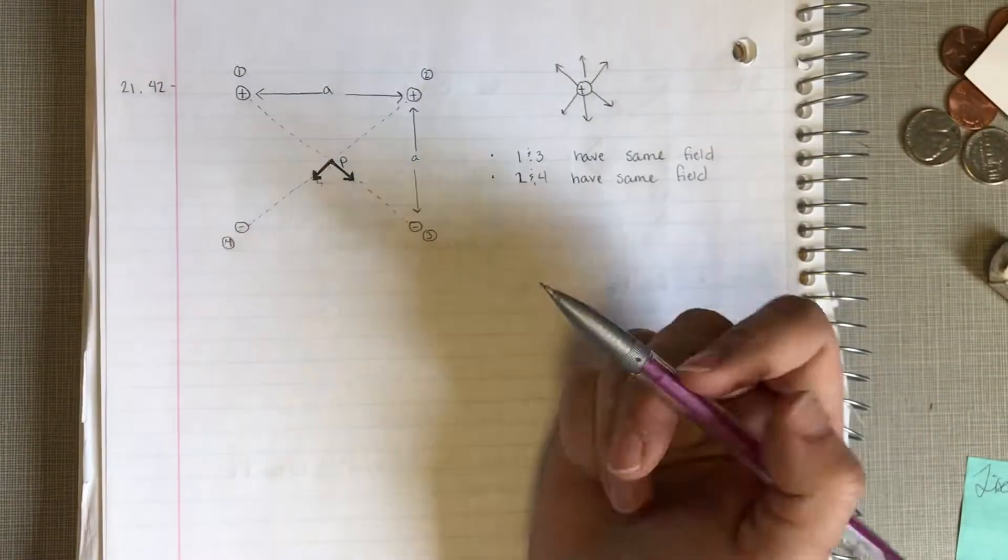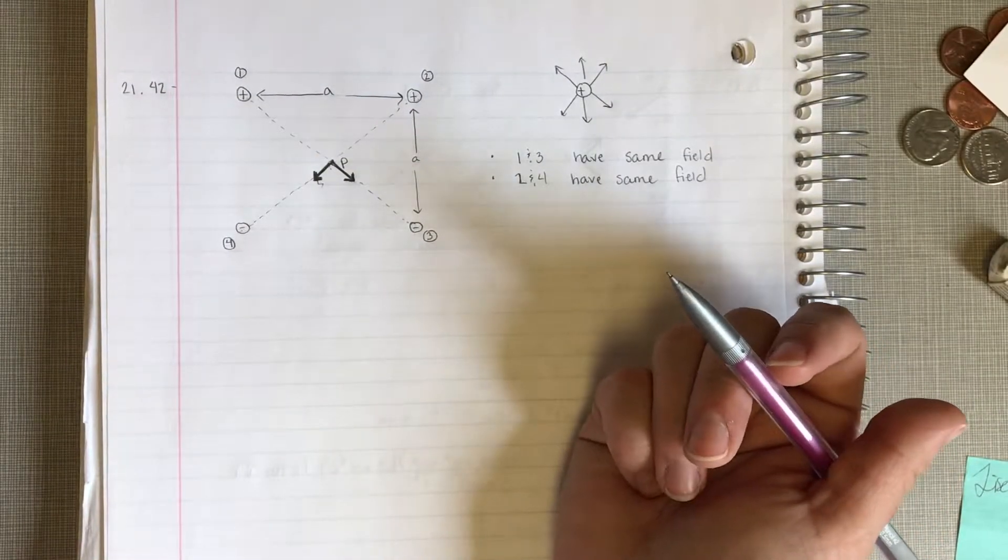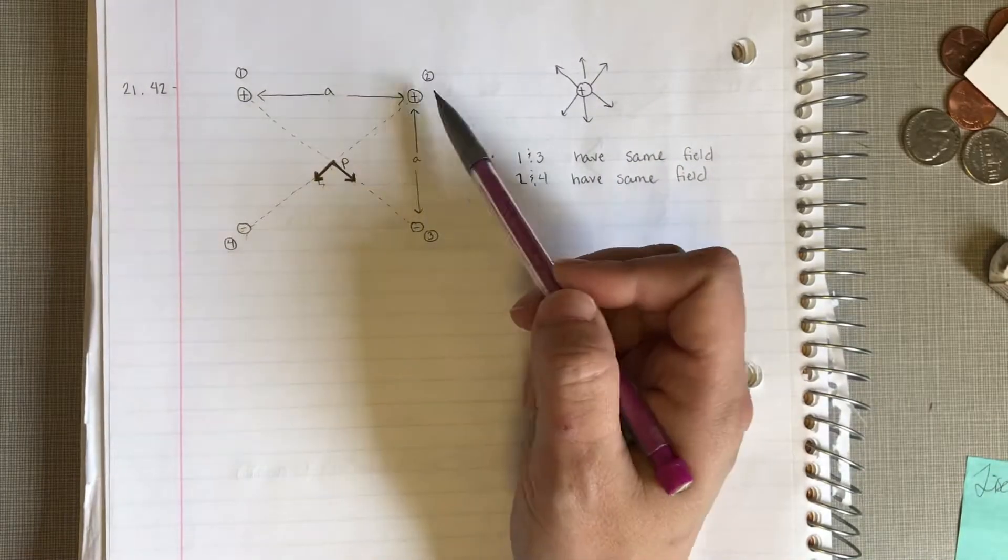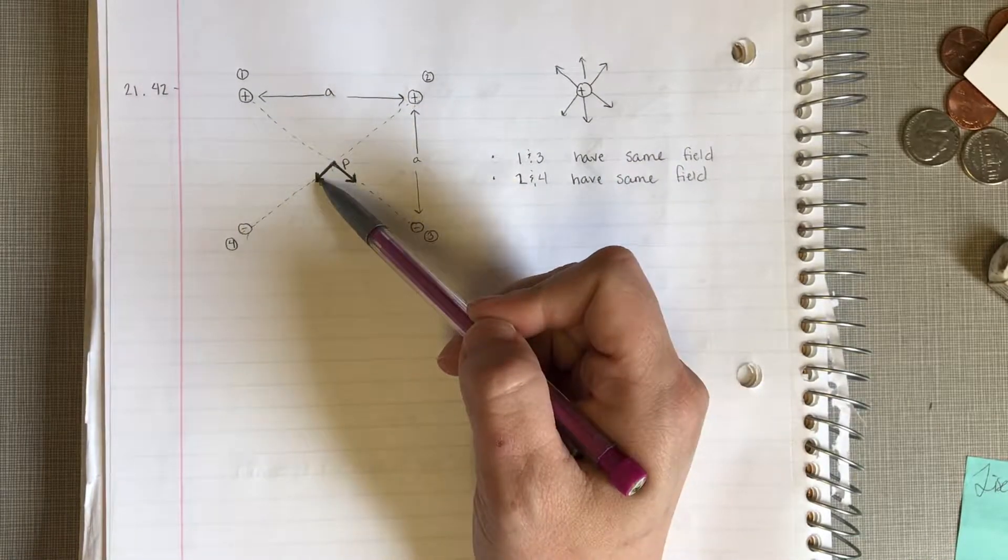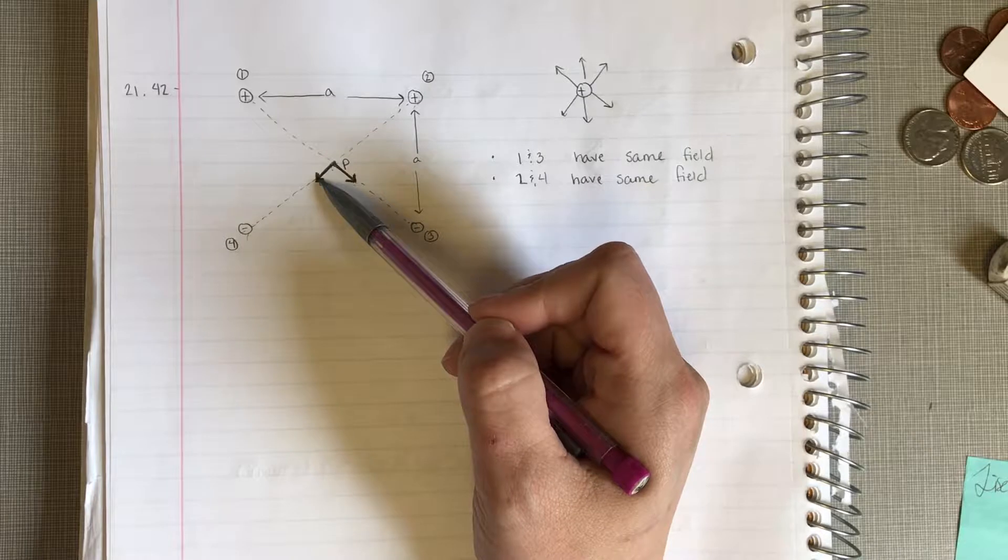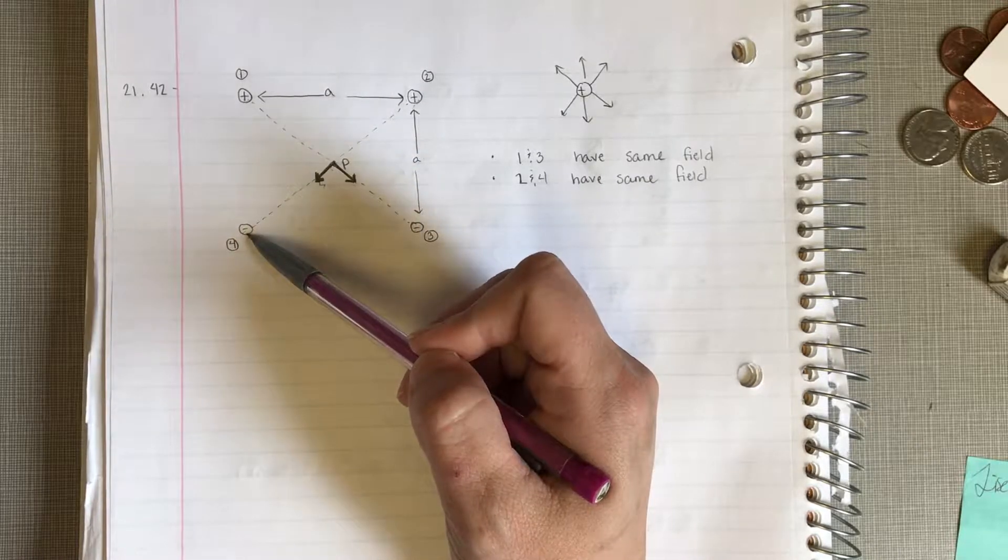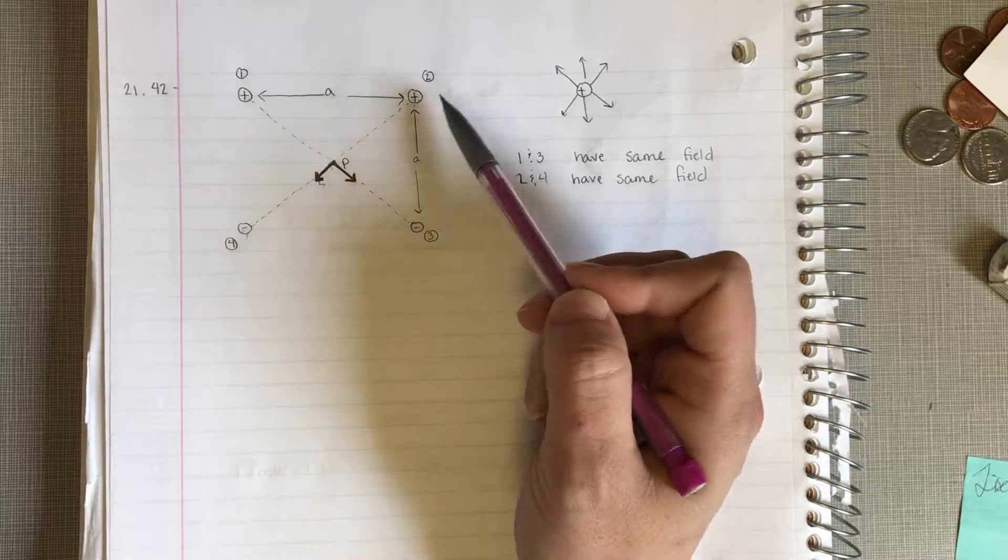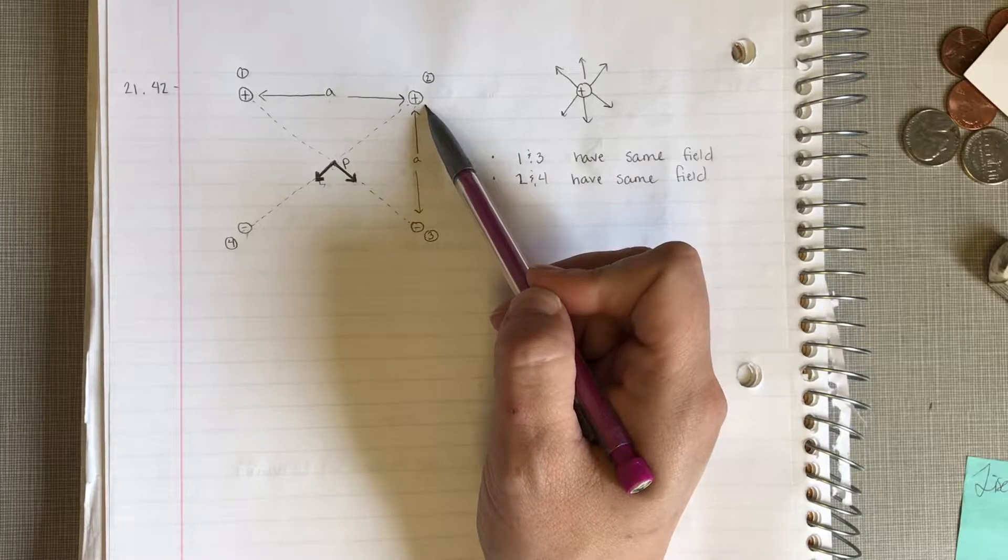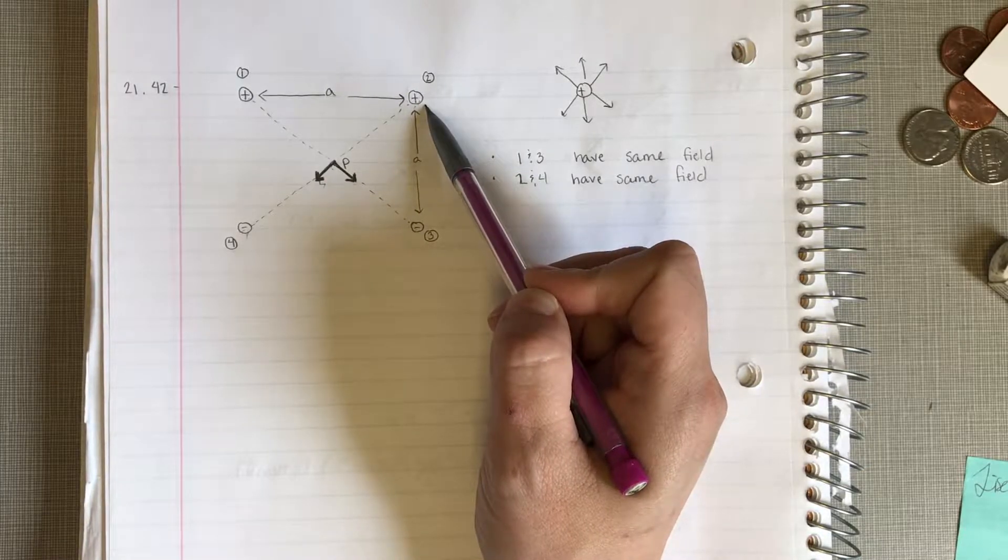Now, you might be like, wait, they're not the same charge, one's plus, one's minus. That's true, but because of where they're located, the resulting field is going to be exactly the same. So, putting a negative charge over here is exactly the same as putting a positive charge on the other side. You just flip it across the axis.